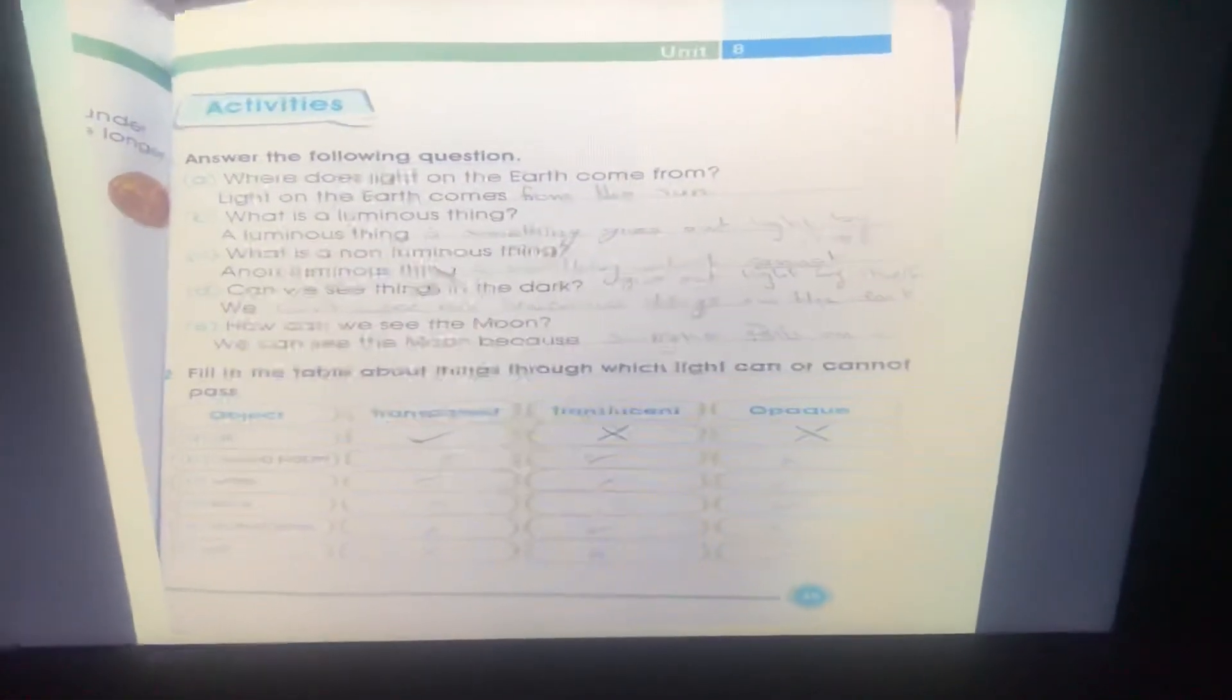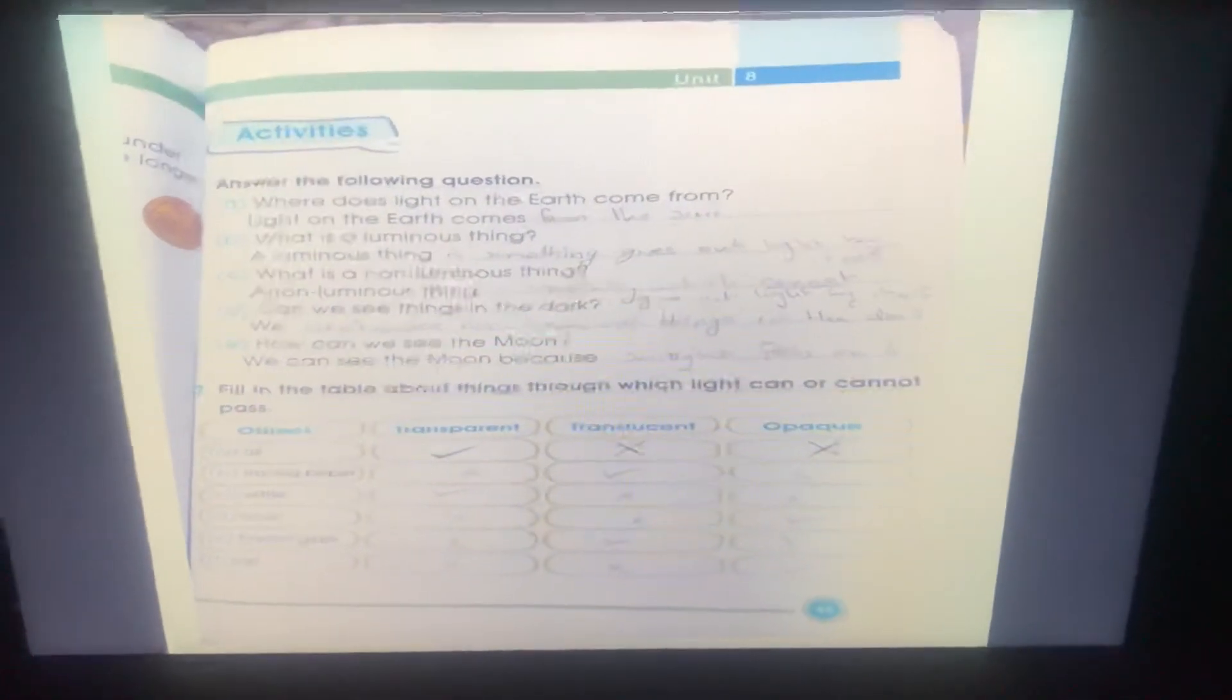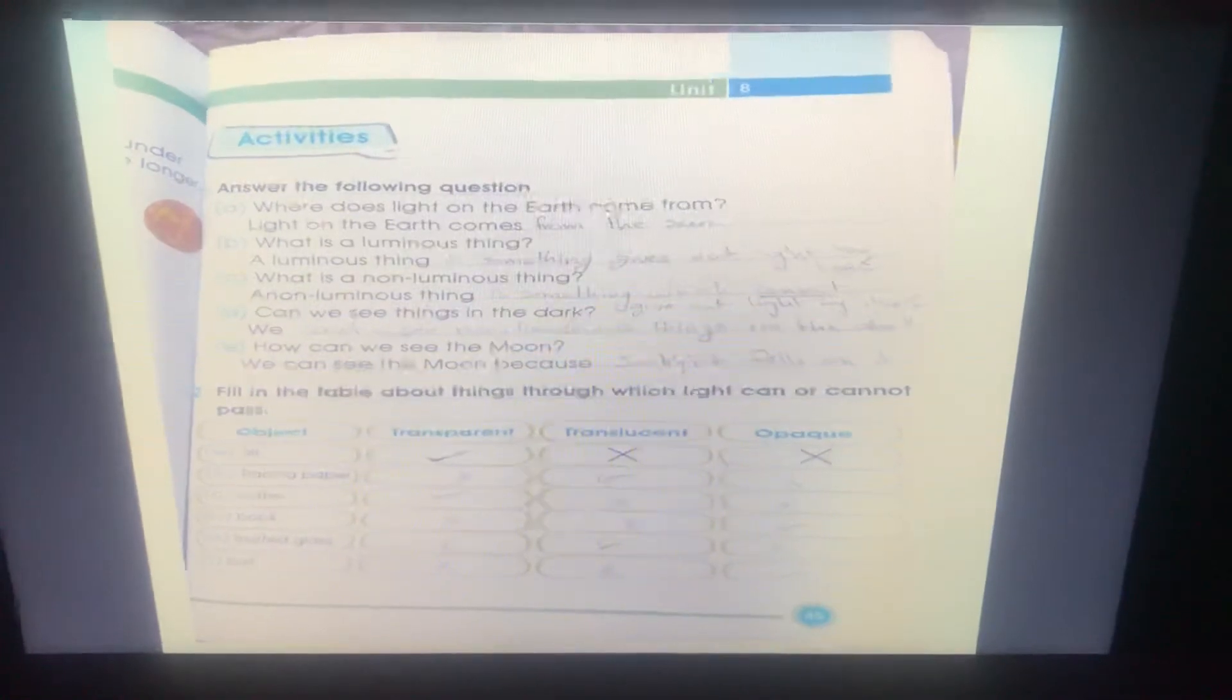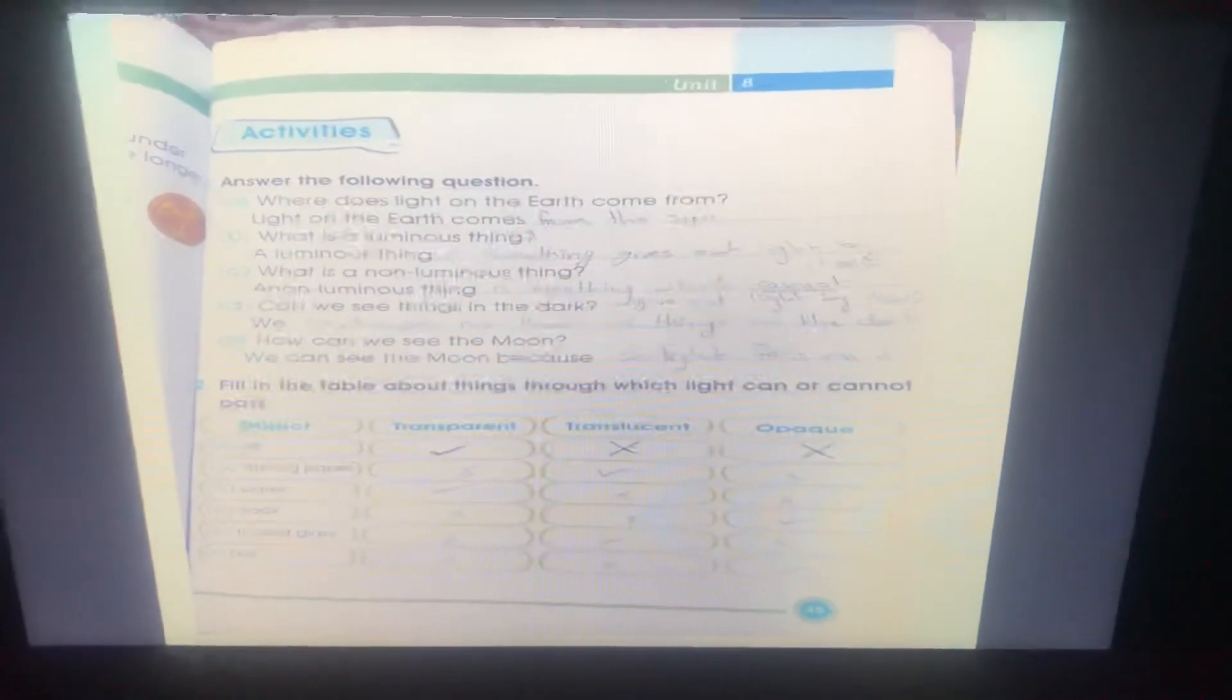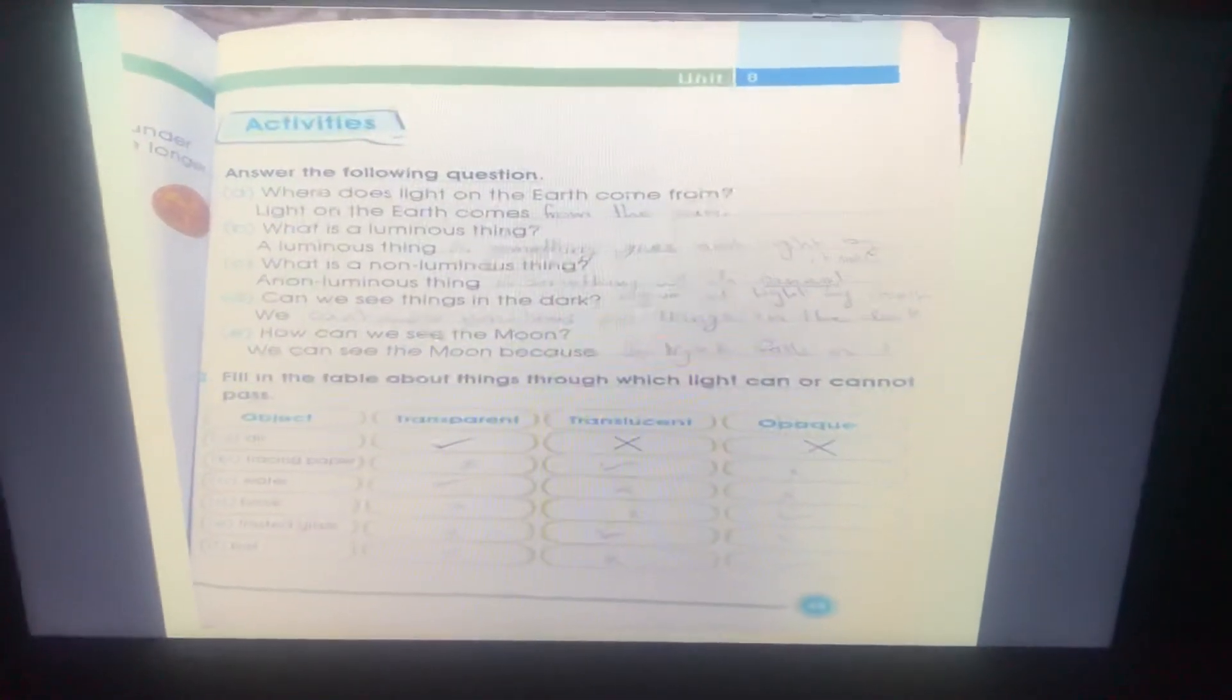Answer the following question. Where does light on the earth come from? Light on the earth comes from the Sun.